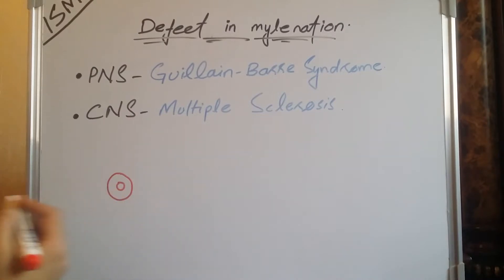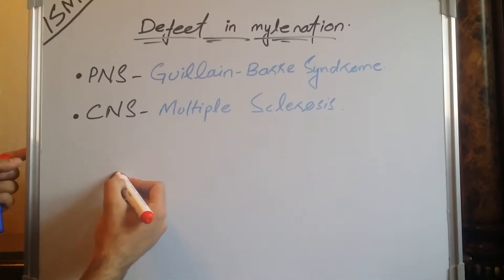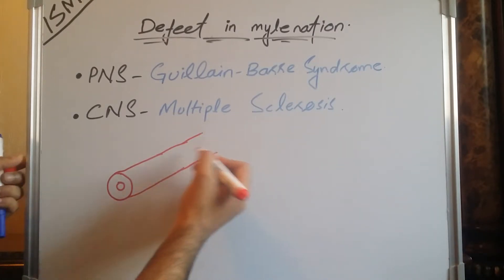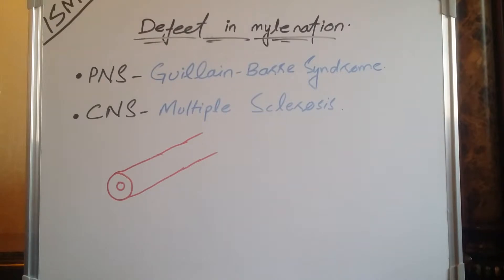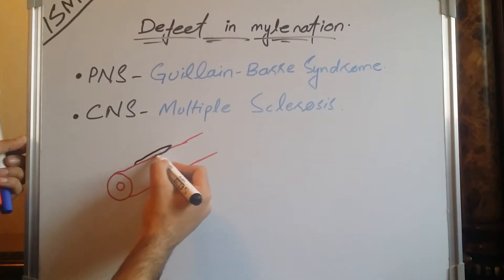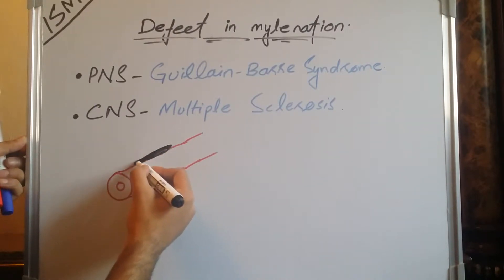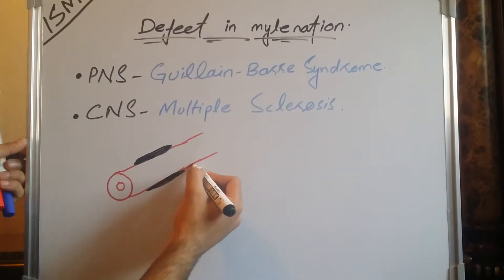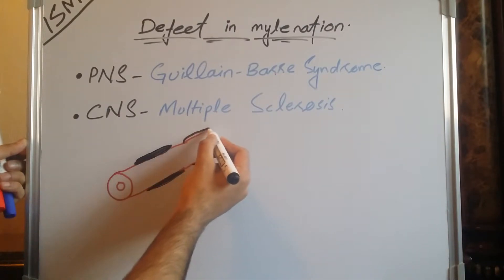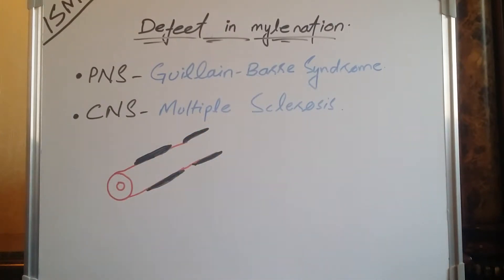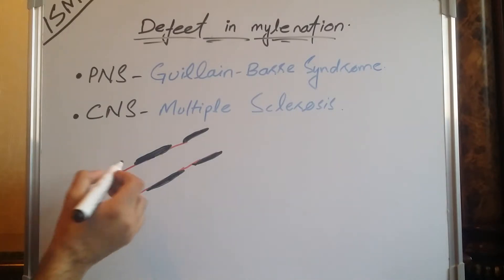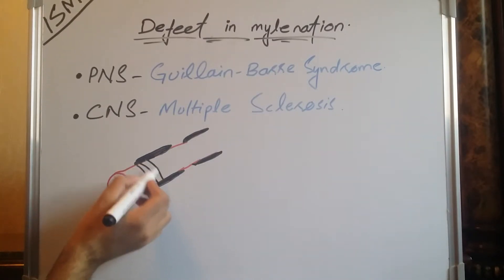For example, here is a neuron, and this is the axon cross-section. Both in the central nervous system and in the peripheral nervous system, this axon is covered with a myelinated sheath. If this myelination is degenerated due to any disease, the neuron which was covered by the myelin sheath becomes exposed.